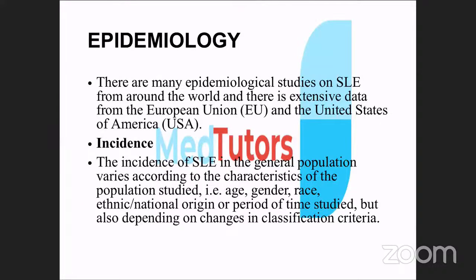Epidemiologically, there are many studies on SLE from Europe and the USA, but few data from Nigeria. The incidence varies according to population, age, gender, race, ethnic origin, and time period. Classification criteria changes — the previous criteria were from the 1980s, but a new criteria was introduced about four to five years ago — have also affected study comparisons.